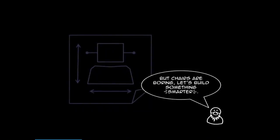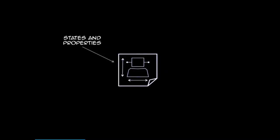But chairs are boring. Let's build something more interesting — let's talk about robots. What makes up a robot? When we're sitting down to design a robot, we know that it has certain states and properties: if it's on, if it's performing a task, things like that. It has some sort of internal logic so that it doesn't bust through the side of your wall and go into the street. And it also has some kind of user interface: an on/off button, microphone, speakers, a screen — things of that nature.